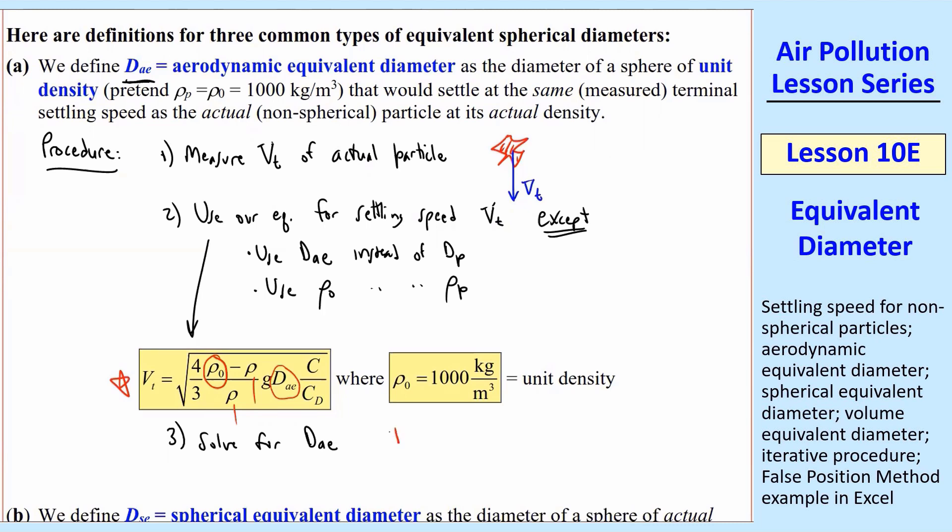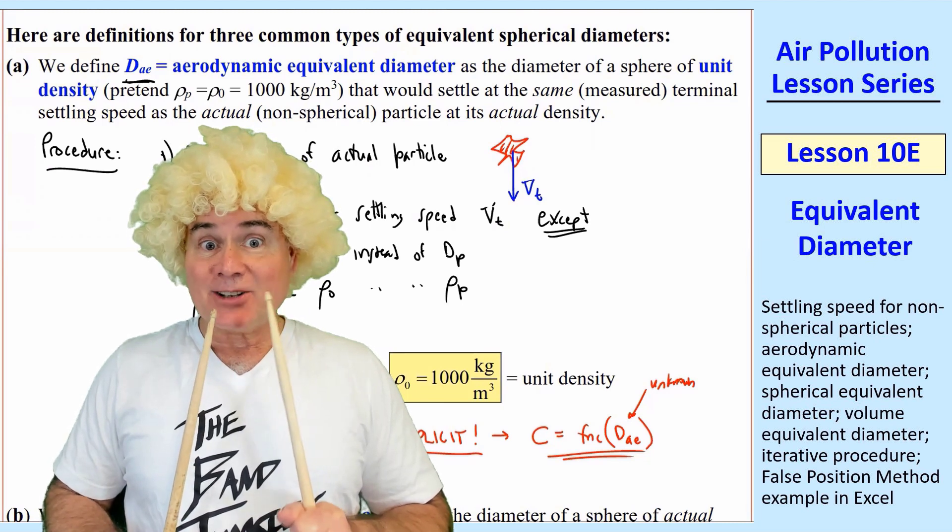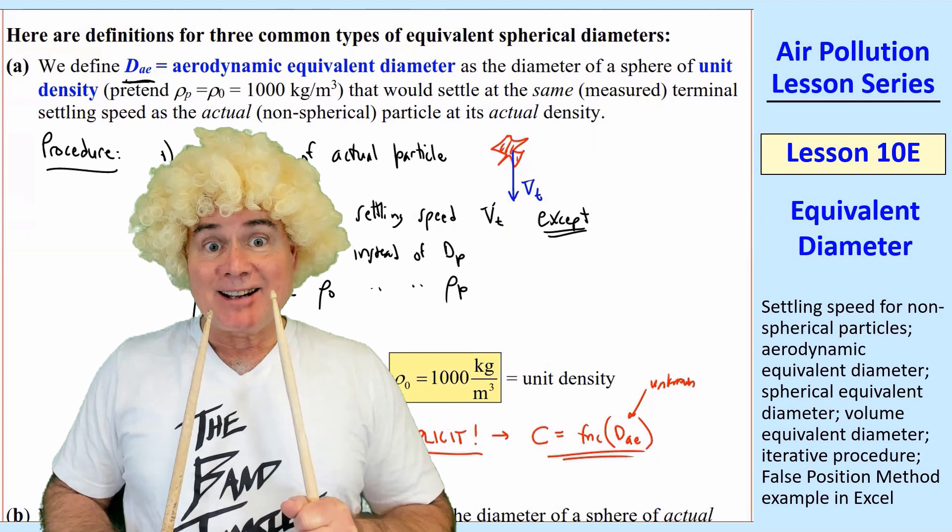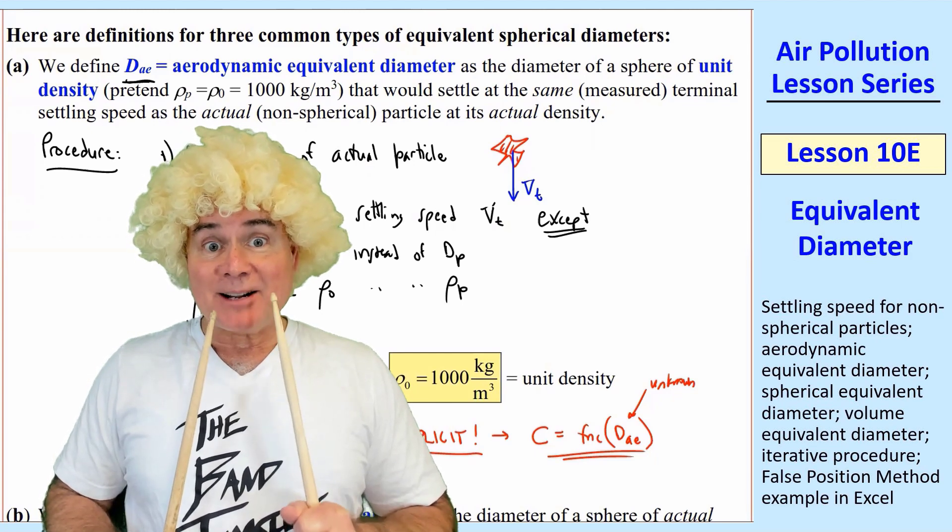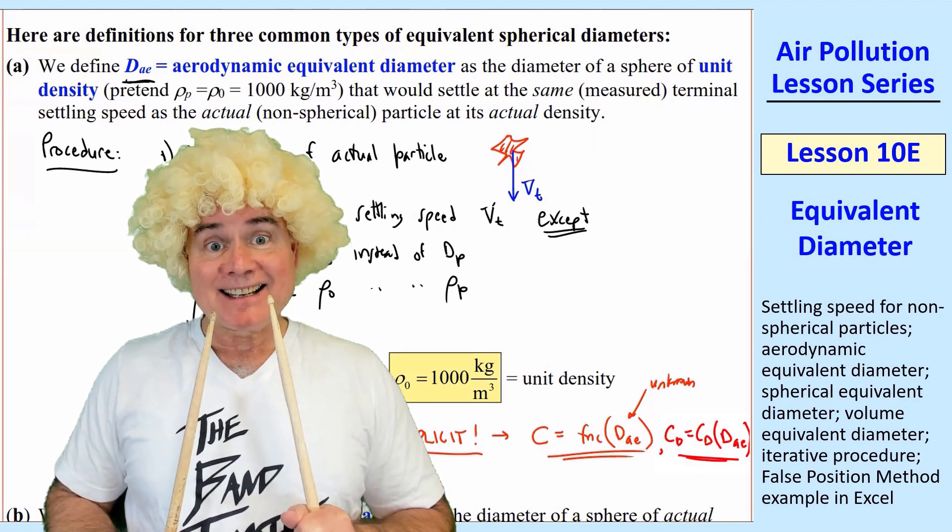The problem is, like we've seen before, this is implicit, so it's not as simple as it sounds. In this case, it's implicit because C, the Cunningham correction factor, is a function of diameter. So in this case, it's a function of dₐₑ, and dₐₑ is the unknown. So we're in this kind of loop here where we need dₐₑ to find C, and then we need C to get our vₜ, and we're going to have to iterate. And our Cₐ is also a function of dₐₑ, because Cₐ is a function of Reynolds number, and Reynolds number is a function of dₐₑ. Good observation, BJ. Let's add that here as well.